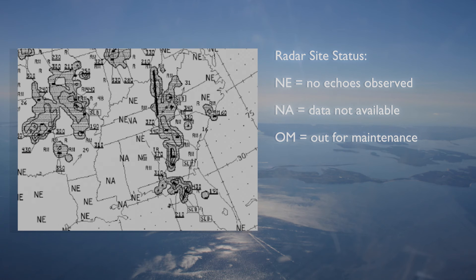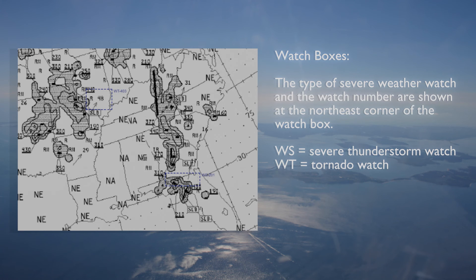NA and OM both indicate data from the radar site is not included in the Radar Summary Chart. If severe weather watches exist during the chart's valid period, they will be depicted by dashed lines on the chart. The type of watch and its designation number will be displayed next to the northeast corner of each watch box. WT means tornado watch, whereas WS stands for severe thunderstorm watch.